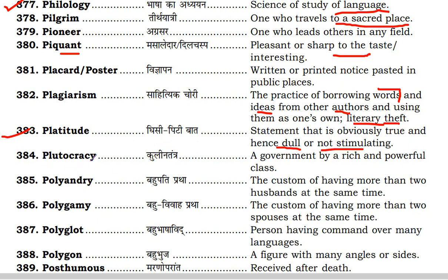Next is plutocracy. 'Cracy' means government. 'Pluto' is written — it means a government formed by a rich and powerful class. Rich and powerful class which forms the government is called plutocracy.